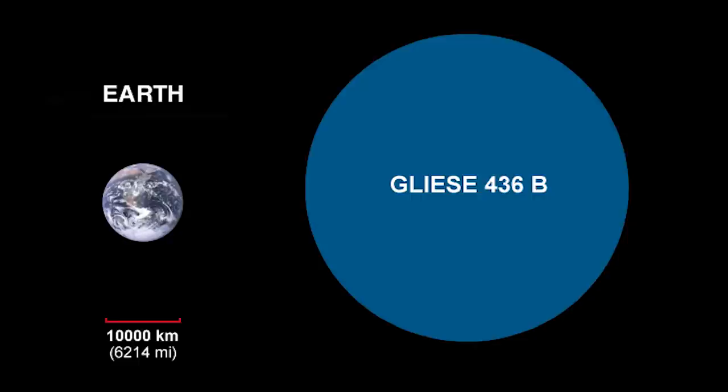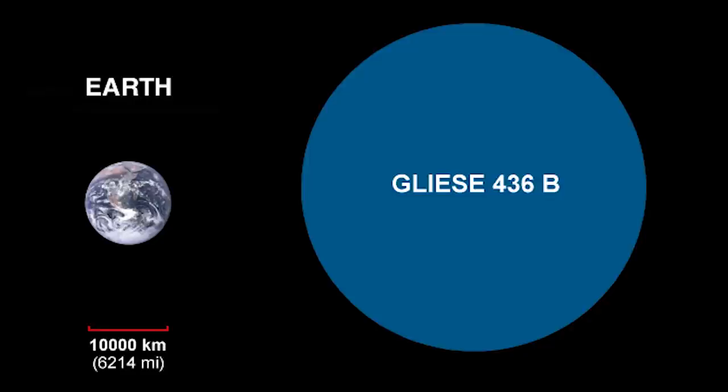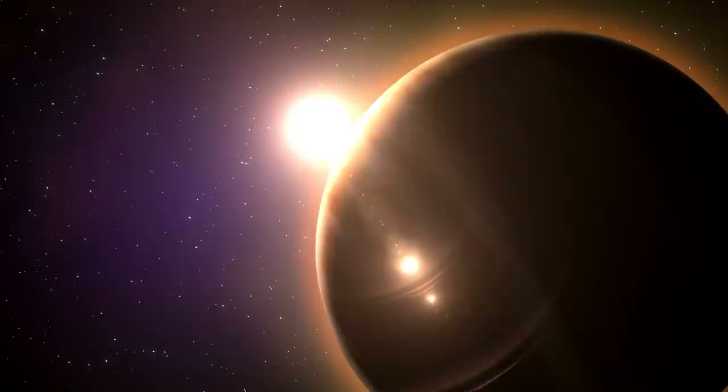Also, this planet is about 10 to 20 times the size of Earth and completes one full orbit around its parent star in just a little over two days, which proves the fact that the planet is located remarkably close to its star. Due to such proximity, it is said that it will only take a few nanoseconds to set something on fire around the planet.